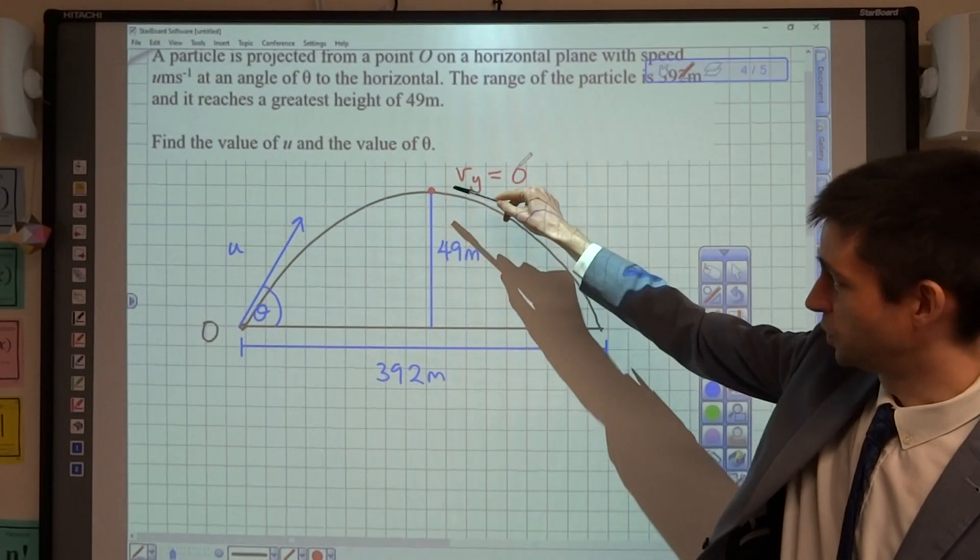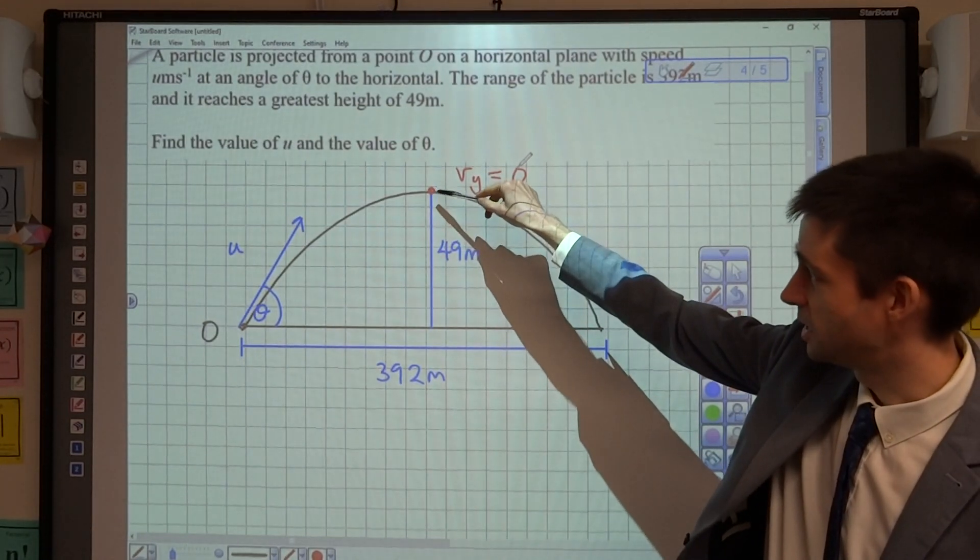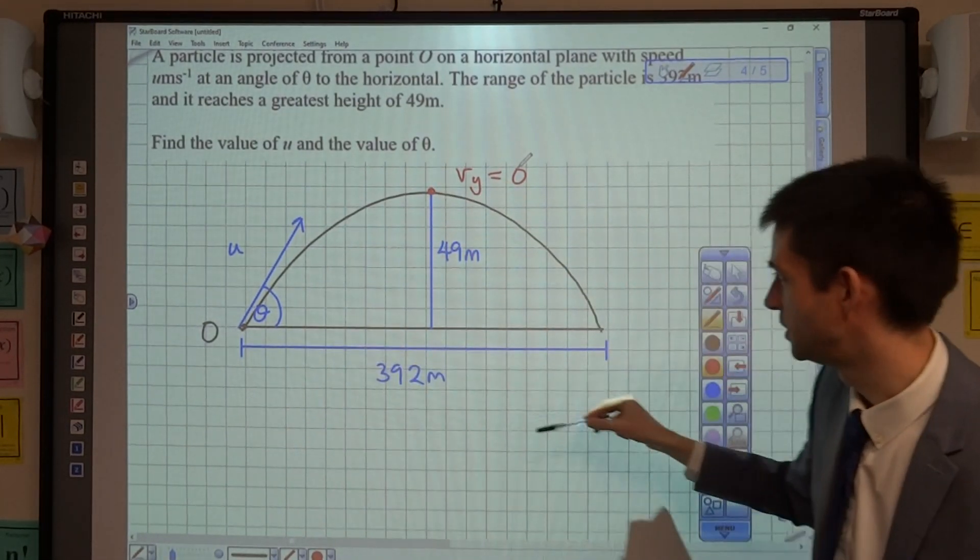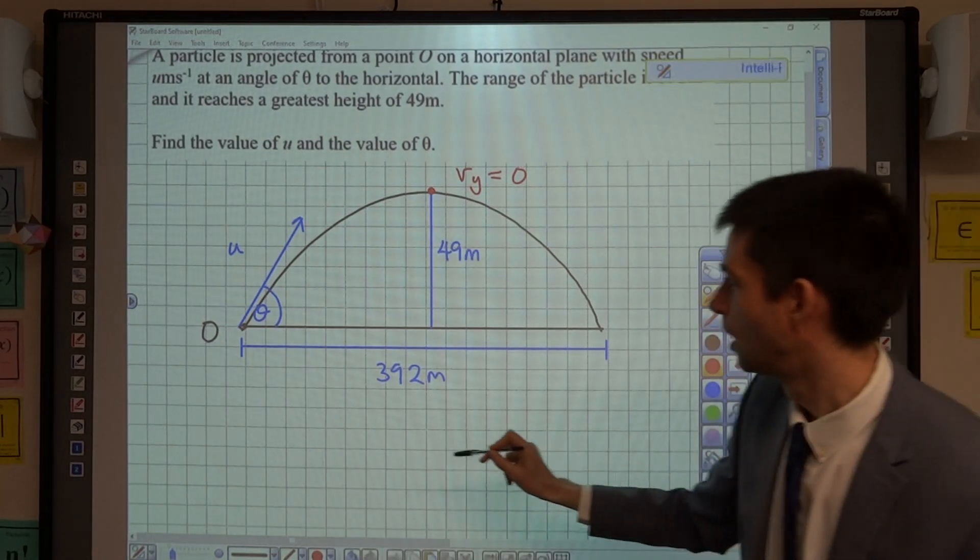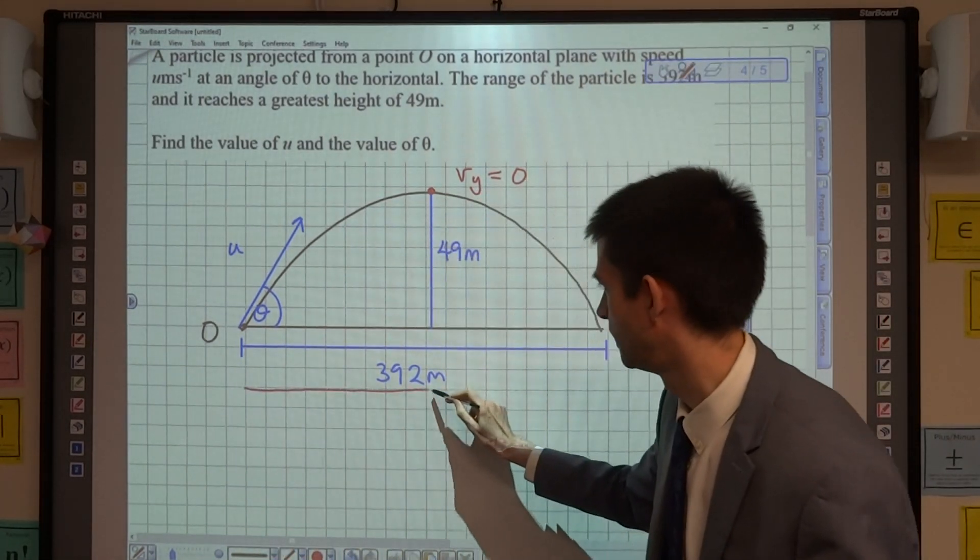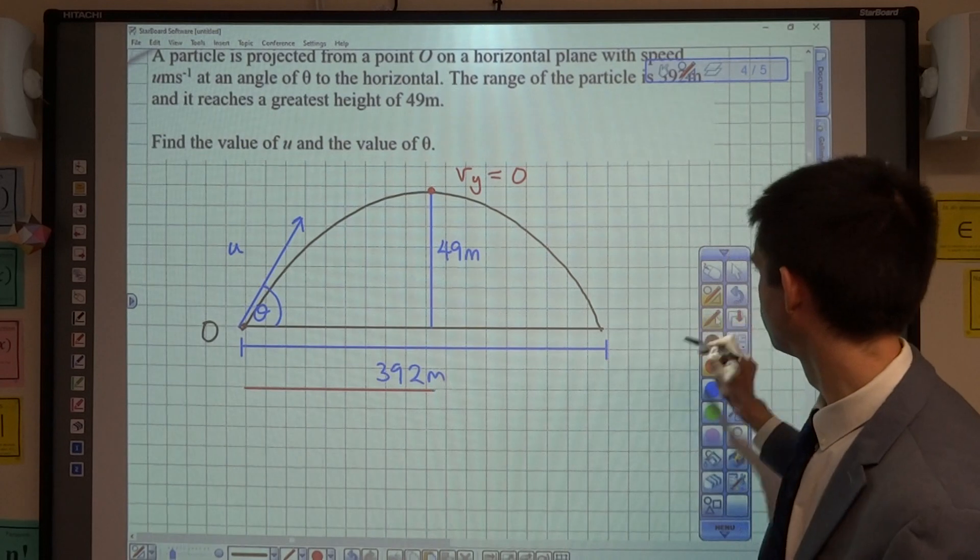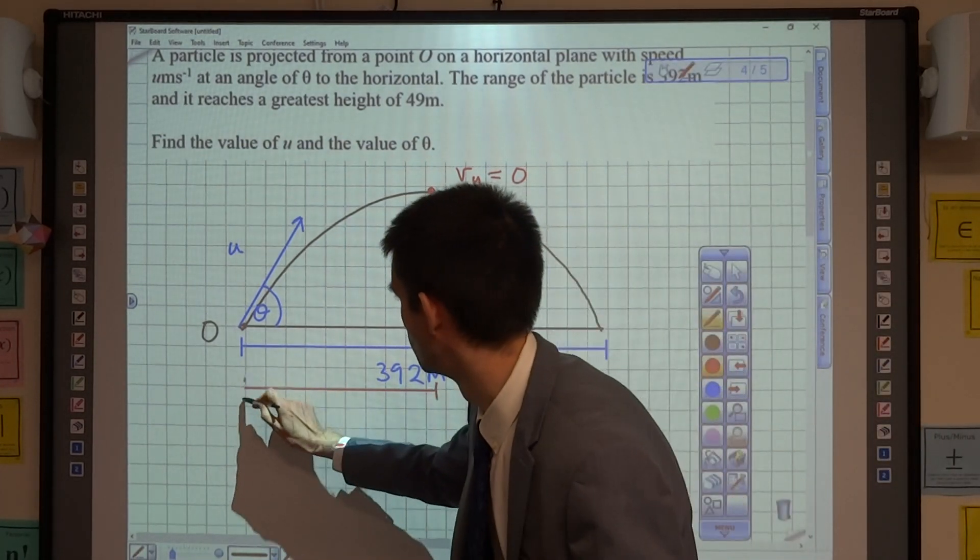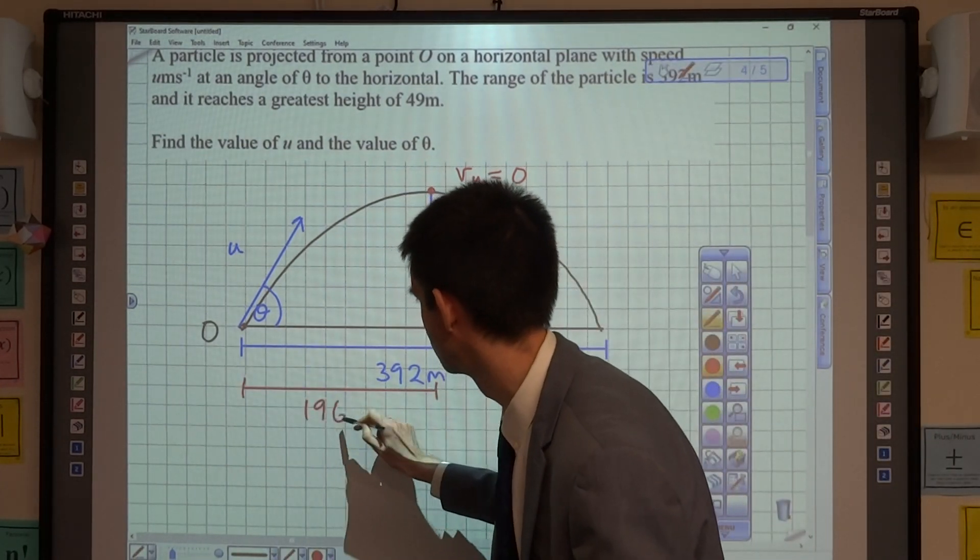Now, if I set vy equals zero, it's going to find me the time at this point here. So I don't want to be using 392. I want to be using half of 392, which is 196 metres.